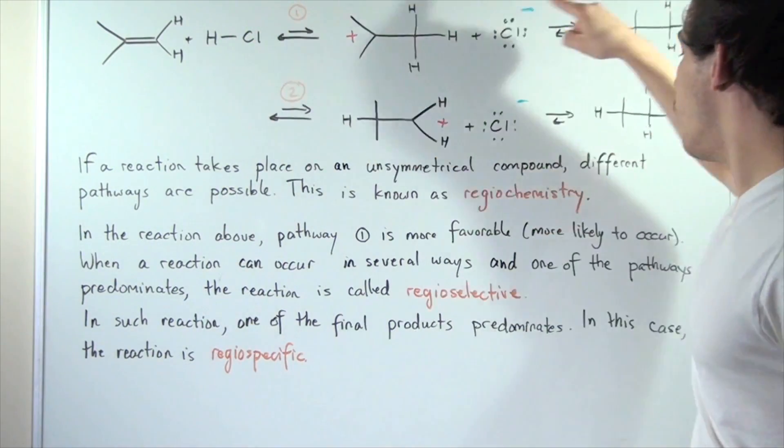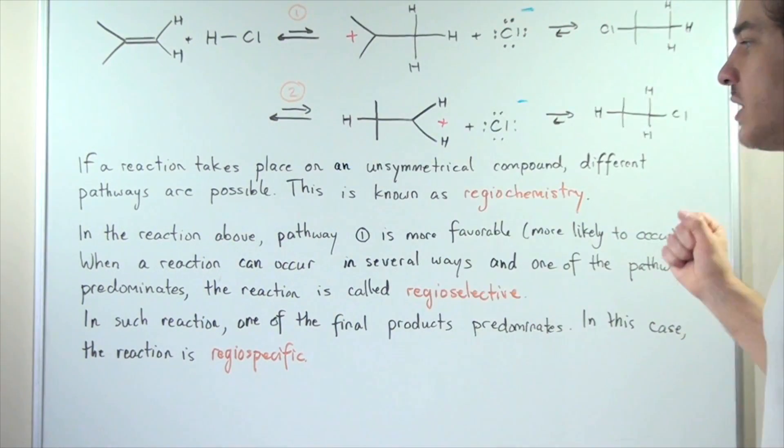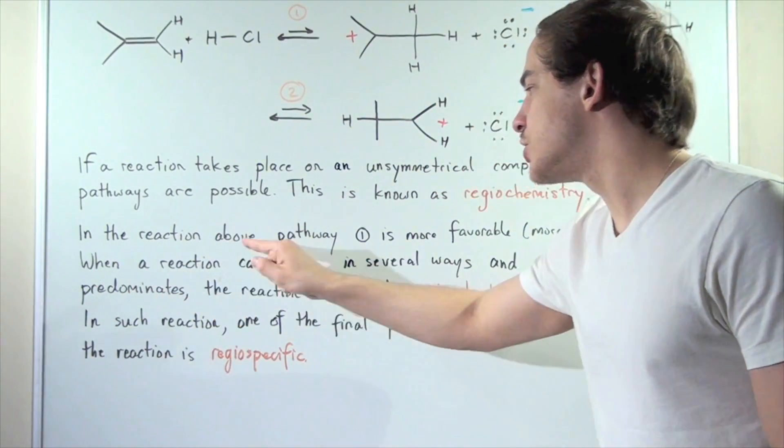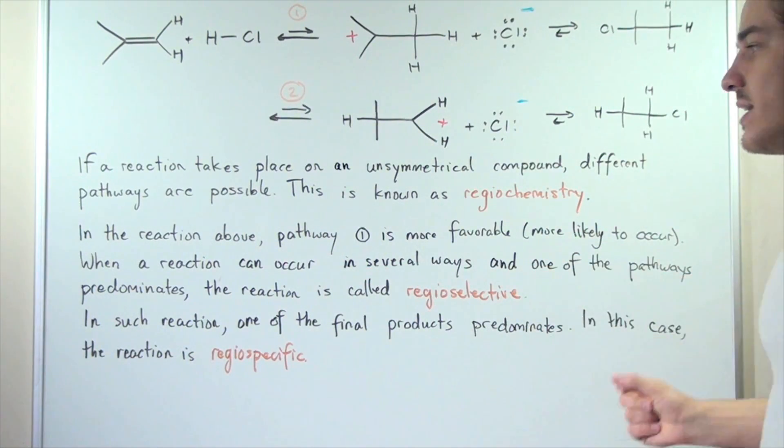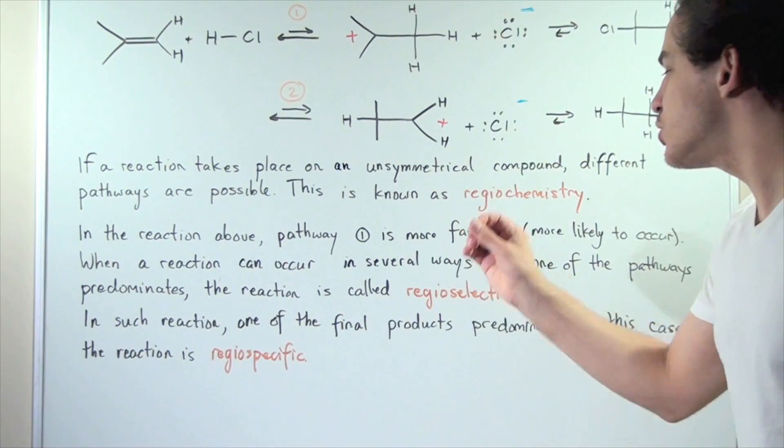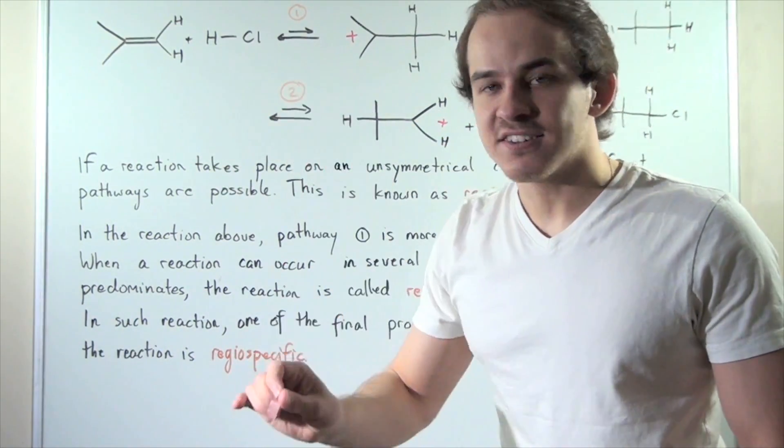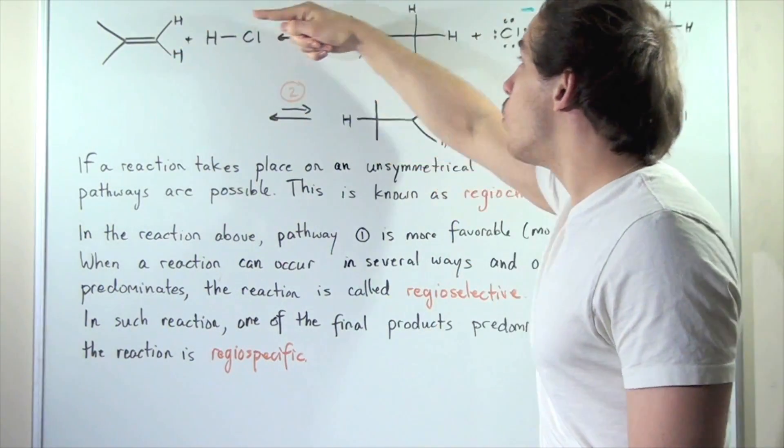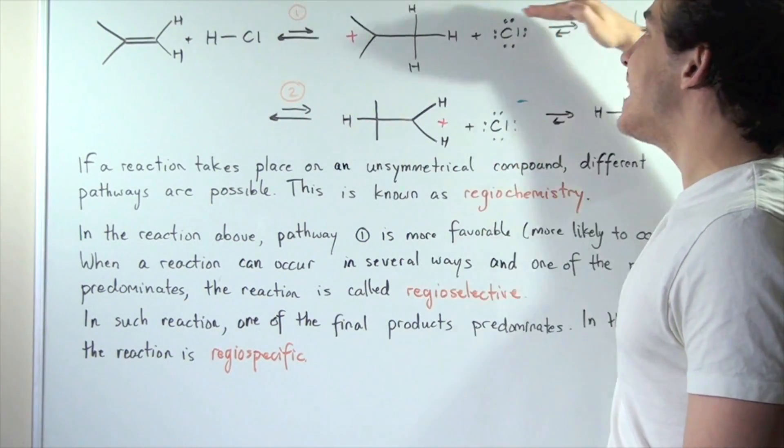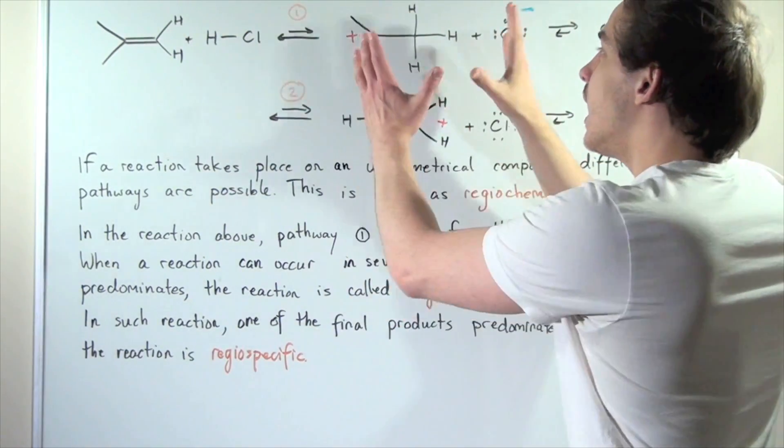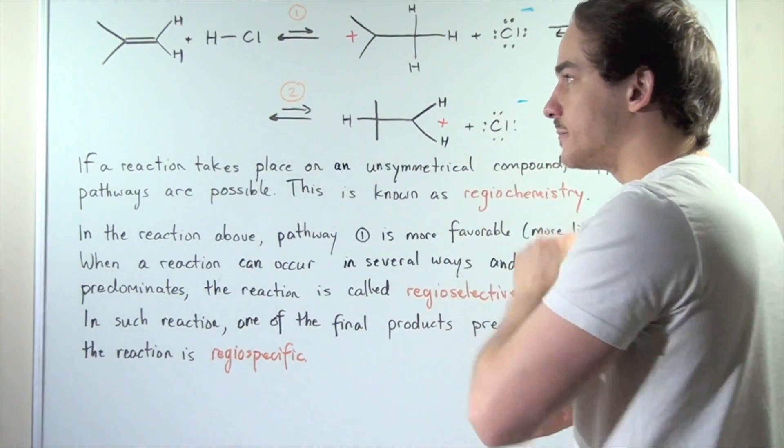Because pathway one is more favorable, it's more stable and more likely to take place. Generally, when a reaction can occur in several ways and one of the pathways predominates, the reaction is called regioselective. This reaction is regioselective because pathway one predominates over pathway two. Pathway one is more likely to take place because this intermediate is more stable than this intermediate.